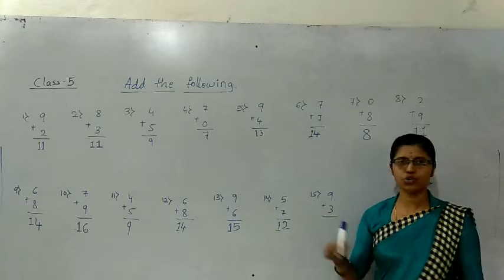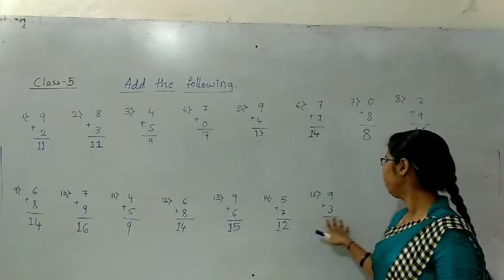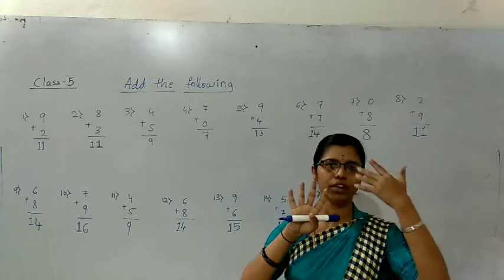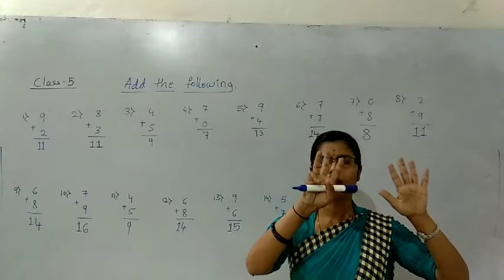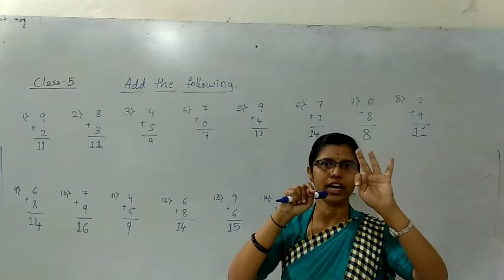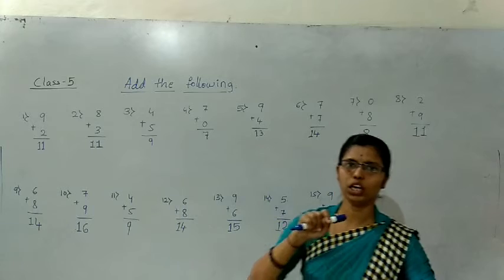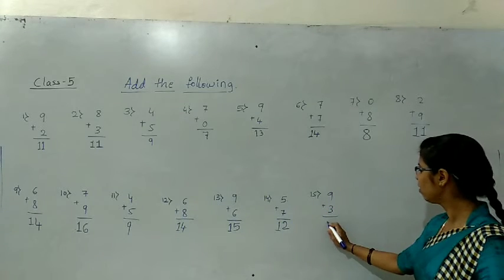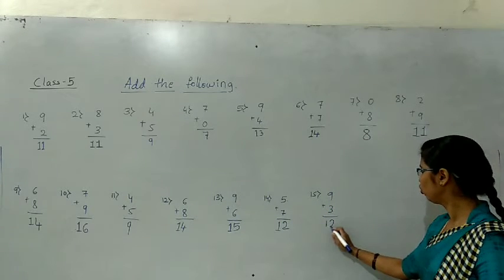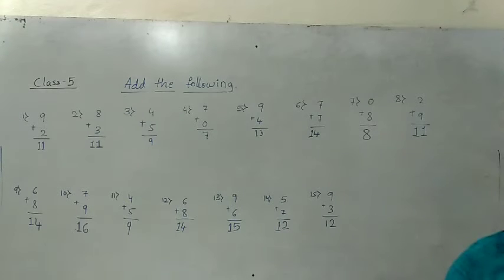Now you should hold 9 fingers. The below number is 3. Count after 3: four, five, six, seven, eight, nine, ten, eleven, twelve. The answer is 12.